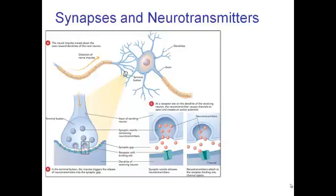Up to now we've been talking about the action of a single neuron, but now we're looking at the connection between a sending neuron and a receiving neuron. We want the neuron to be sending a message to the next neuron. And what we're talking about is the synapse — the link between the terminal button of the sending neuron and the dendrite of a receiving neuron.